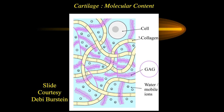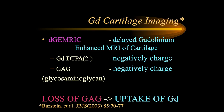So T1-Rho is a better measure of the density of glucosaminoglycans, and T2 is more of a measure of the integrity of the collagen substrate.